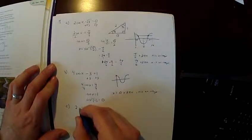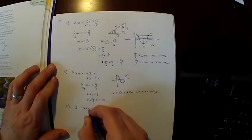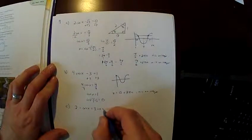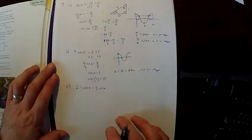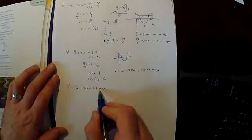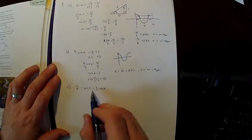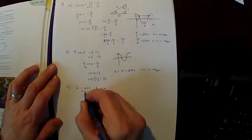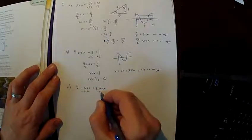C says that 2 minus the cosine of x equals 3 cosine of x. Let's solve this. This is a little bit different flavor. Here I have cosines on both sides of the equation. So I would want to get cosines all on one side. To do that, I'm going to add cosine of x here and add cosine of x there.